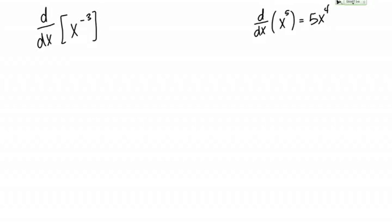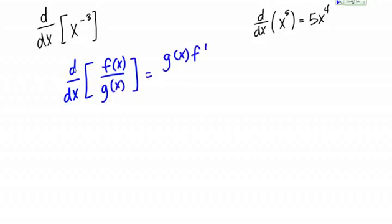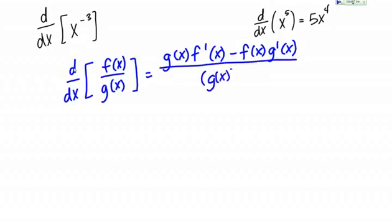Let me remind you of the formula for the quotient rule. It looks like this: the derivative with respect to x of the quotient f of x divided by g of x equals g of x f prime of x minus f of x g prime of x all over g of x squared.